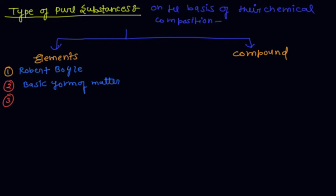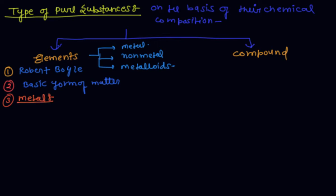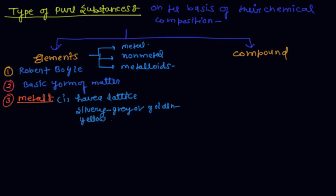Elements can be divided into three types: metals, non-metals, and metalloids. Metals have some specific properties. First, metals have luster. Second, metals have a silvery-gray or golden yellow color.